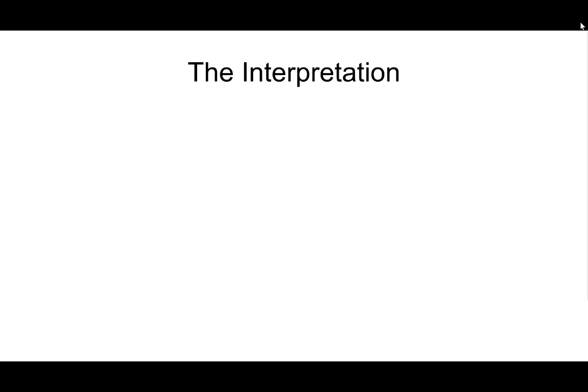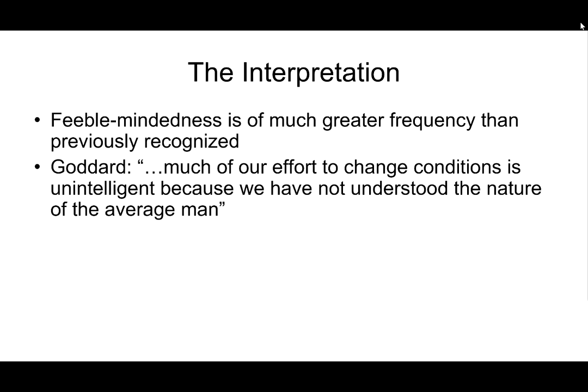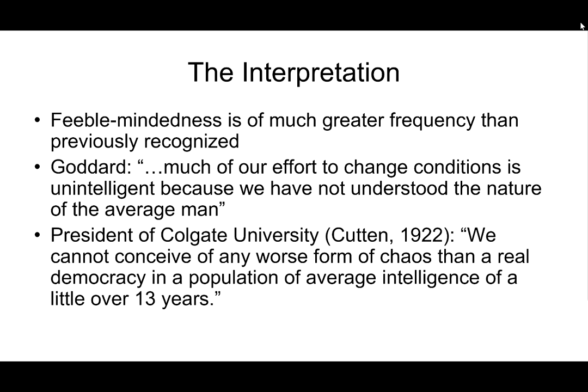Regarding the results: they concluded that feeble-mindedness is of much greater frequency than previously recognized. Goddard said, quote: 'Much of our effort to change conditions is unintelligent because we have not understood the nature of the average man.' The average white man in the United States had a mental age just above 13. Goddard found this 'almost unbelievable' — and it should have been unbelievable, because it is.